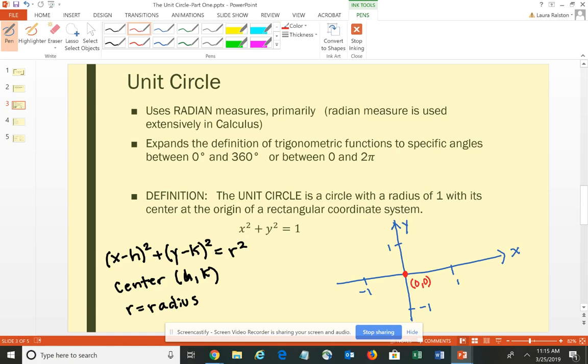So my h and k are 0, and then my radius goes from the center out to a value of 1 in every direction. Now it's a little bit hard for me to draw that in every direction. So roughly – and again, this is a very rough sketch of a circle – this would be your circle.